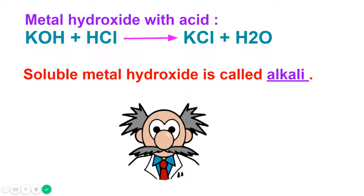Now let's see the reaction of metal hydroxide with acid. As you can see, potassium hydroxide is reacting with hydrochloric acid and is forming potassium chloride and water.